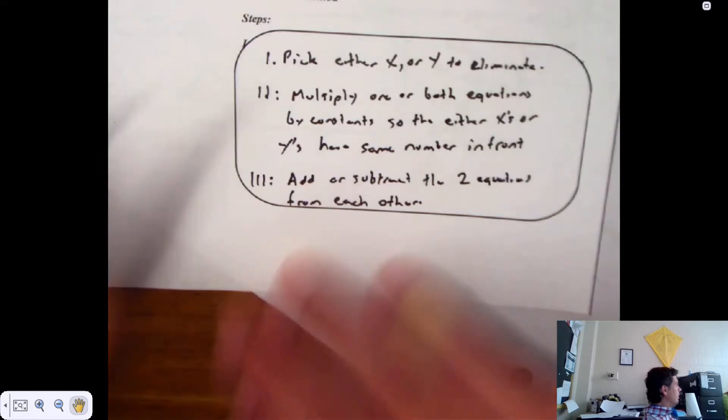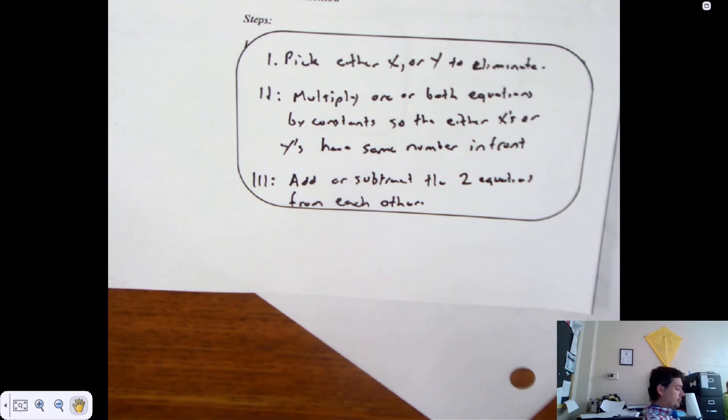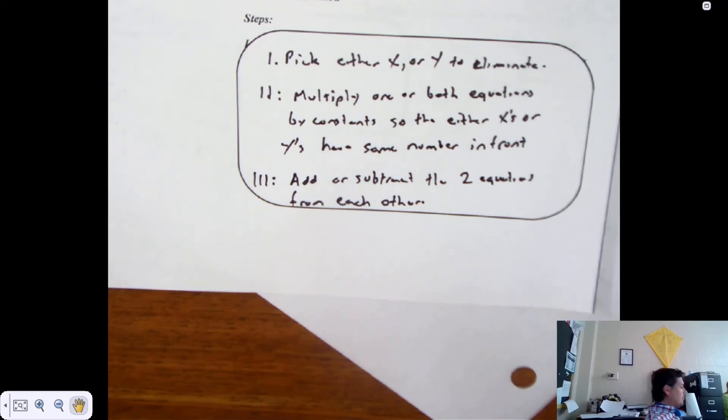It doesn't necessarily have to be the same number. One of them can be positive, one of them can be negative. They have the same number in front of them. And step 3 is add or subtract the two equations from each other. You did this in Osborne. You did this. I swear you did it. I remember doing it in eighth grade in Palmersville. You did this in eighth grade in Palmersville. You'll probably remember doing it. You'll probably remember you didn't like it.